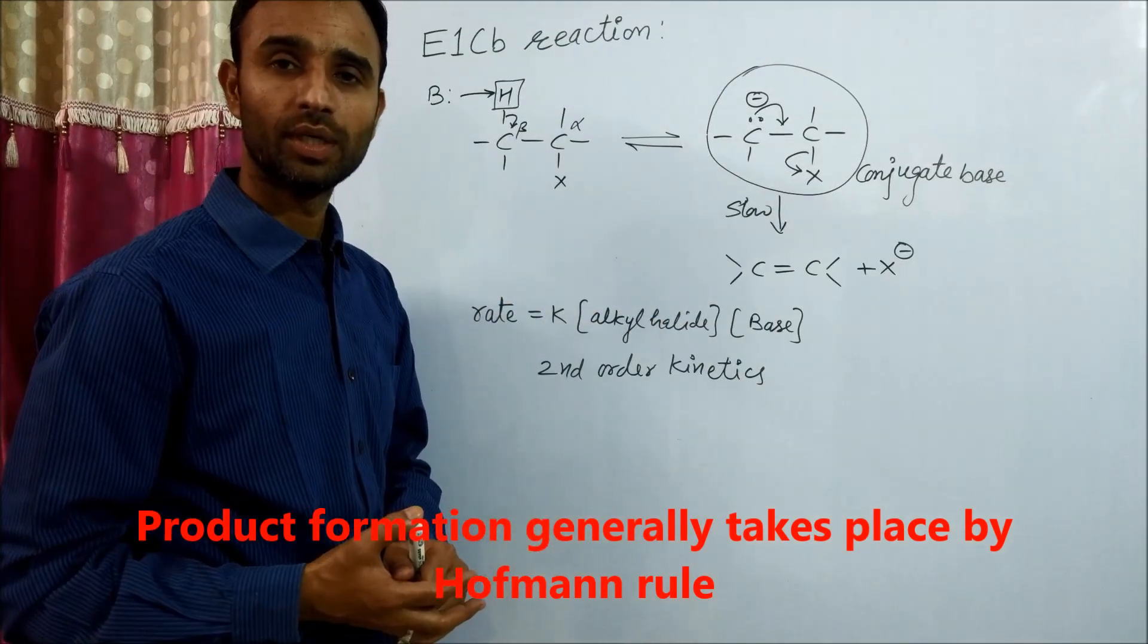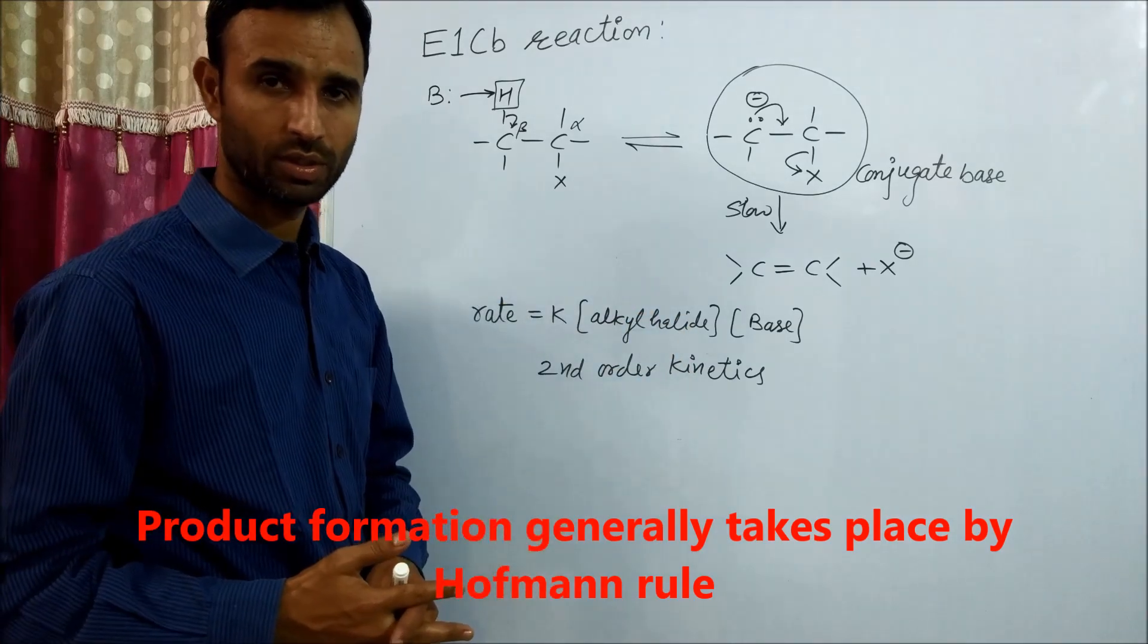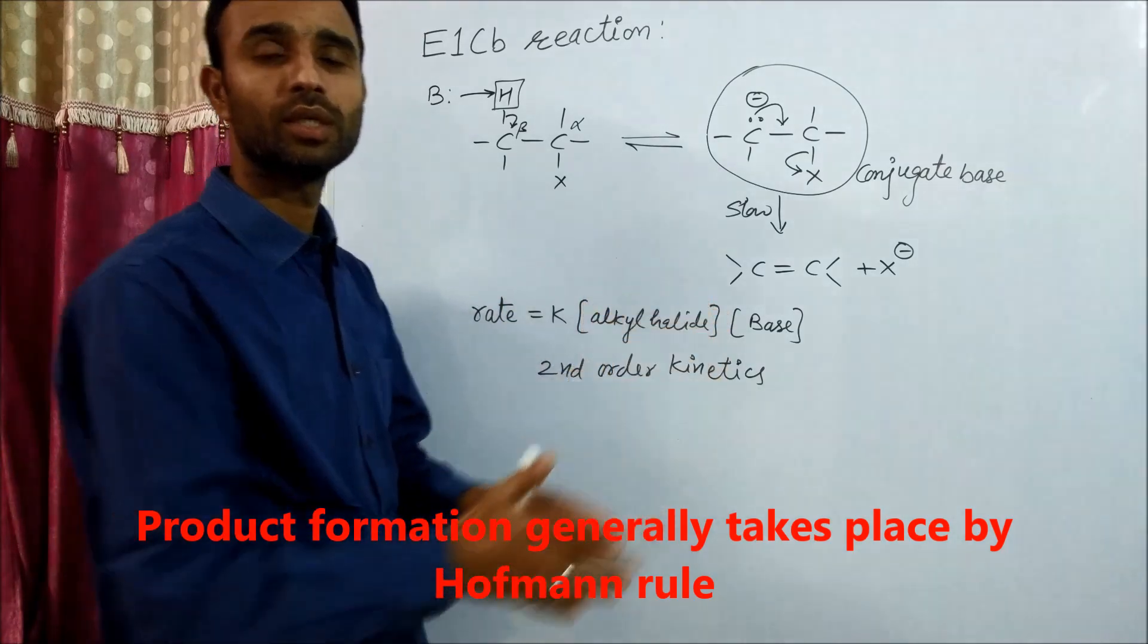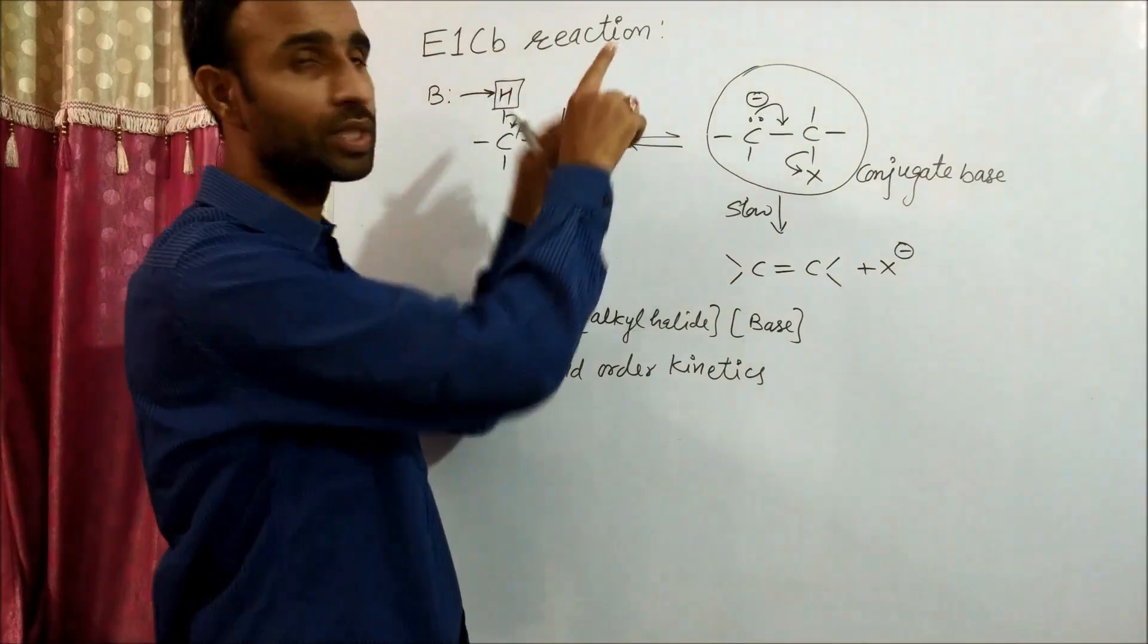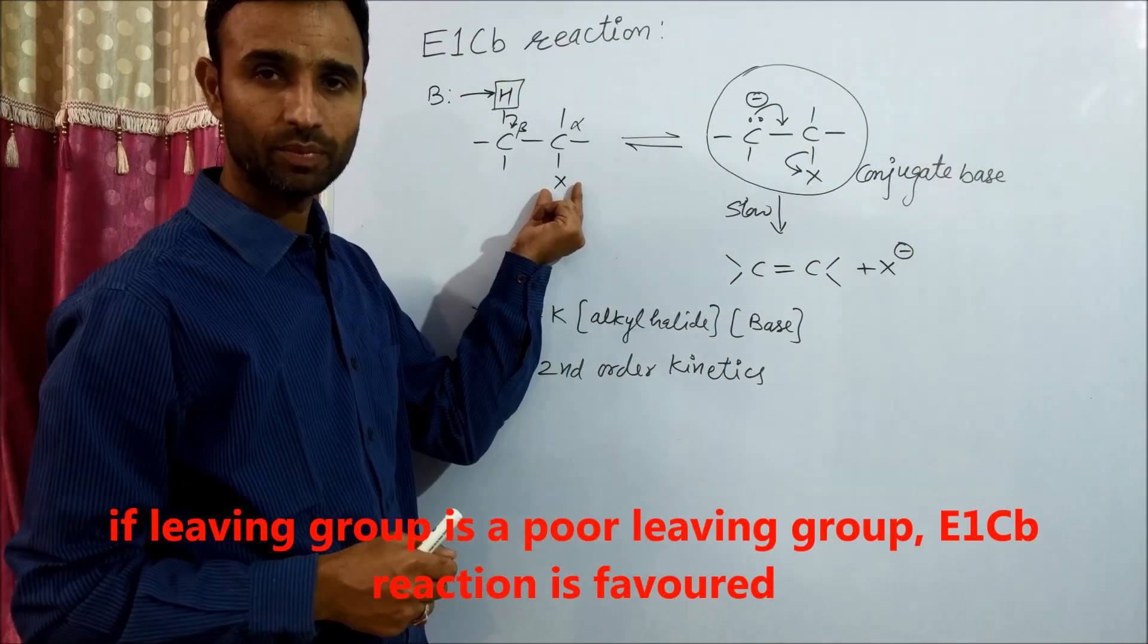The alkene is formed as the Hofmann product, which is the product formed in E1CB reaction. The leaving group should be a poor leaving group.